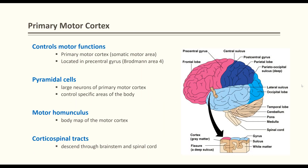The primary motor cortex: the central sulcus divides the motor part of the brain from the sensory part. Everything anterior to the central sulcus is motor. The precentral gyrus is the primary motor gyrus and is responsible for gross movement. The gyrus anterior to the precentral gyrus is called the premotor gyrus, which is responsible for fine motor movement. The postcentral gyrus, posterior to the central sulcus, is sensory.